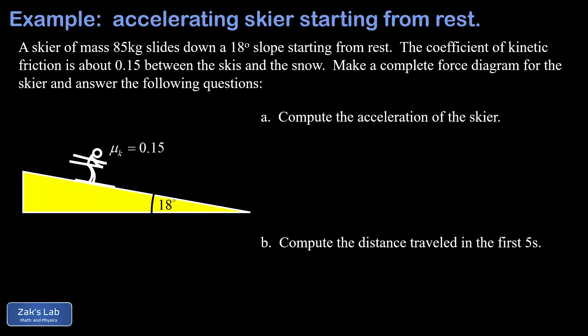In this video, we're solving a kinetic friction problem where a skier starts from rest and slides straight down a hill angled at 18 degrees. We're given the coefficient of friction, 0.15. In the first part of the problem, we're asked for the skier's acceleration, and then in part B, we use that acceleration to calculate the total distance traveled in the first five seconds.